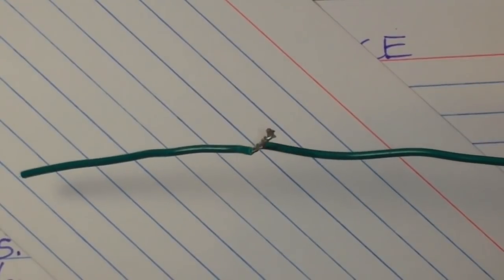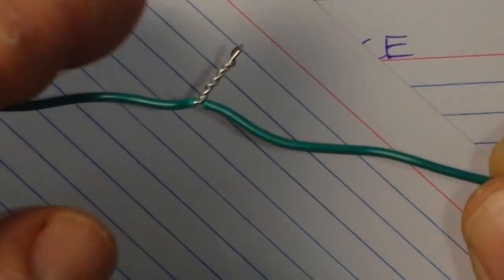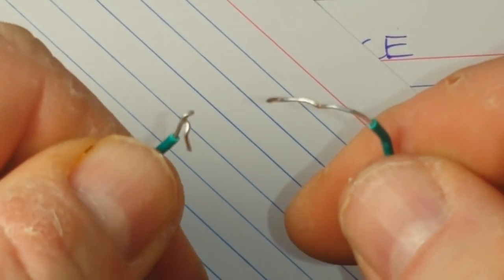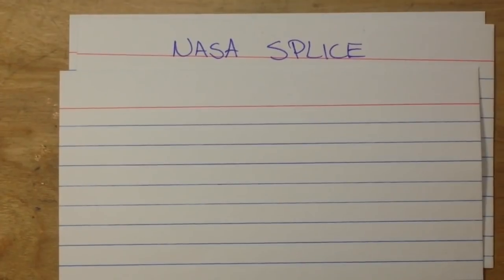And this makes me crazy. This is not strong. Look at that - little pull and it's almost completely apart. Another pull and it's done. That's not how you splice wires. We're going to talk about the right way to splice wires.